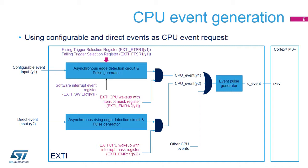This figure aims to explain the various stages enabling the conversion of a configurable event active edge into a processor event. Both configurable and direct events can be configured to issue events to the CPU steered to its RXEV input. Unlike interrupt requests, the CPU has a unique event input, so all event requests are ORed together before entering the event pulse generator. The registers used to mask the generation of events are different from the ones used to mask the generation of interrupts: EXTI-EMR instead of EXTI-IMR.